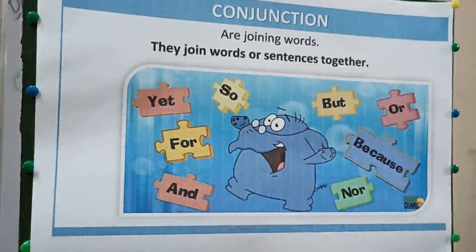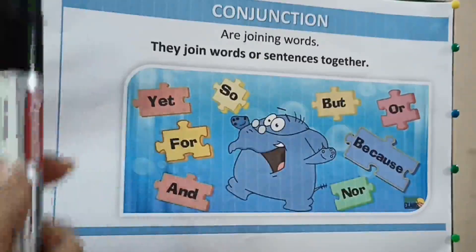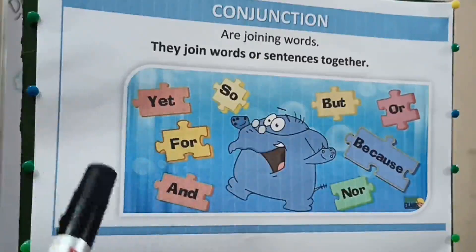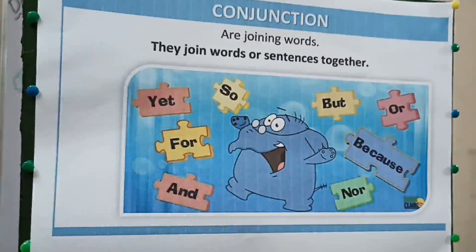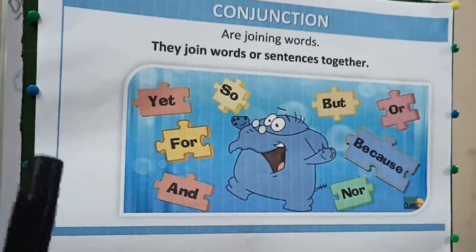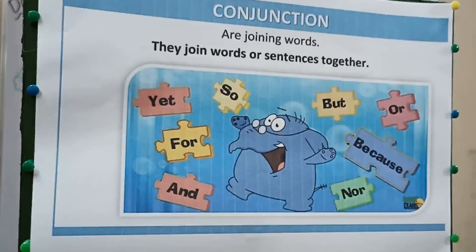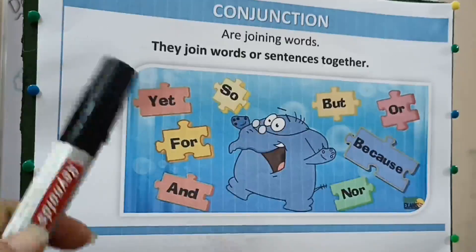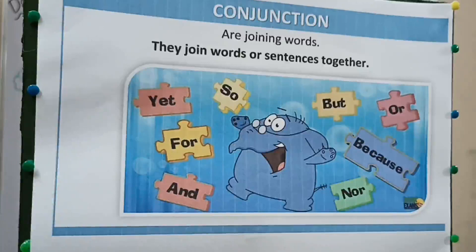Next one is 'yet'. 'Yet' is a contrast despite something. For example, there is a contrast despite something happening. We can say: he is overweight and feels terrible, yet he continues to eat lots of cake.